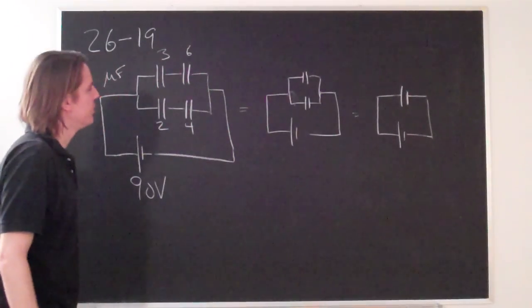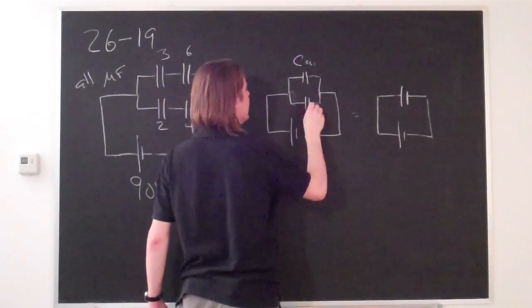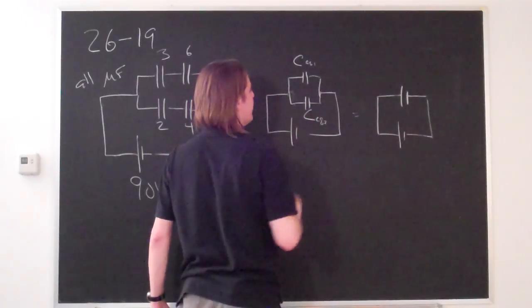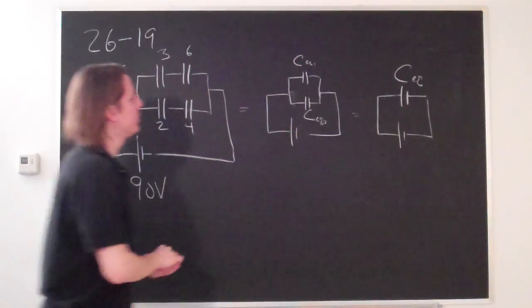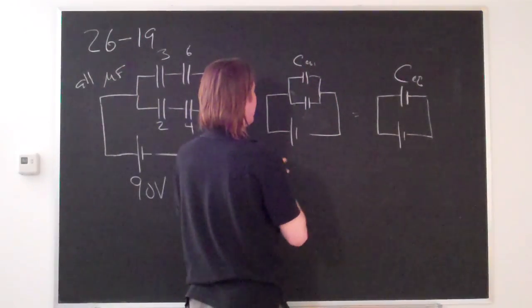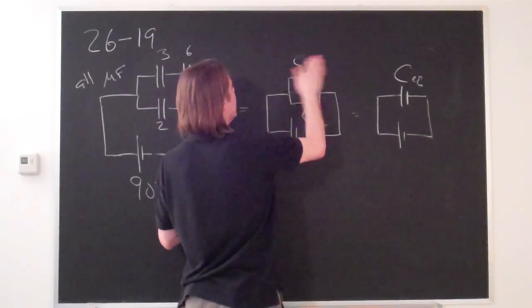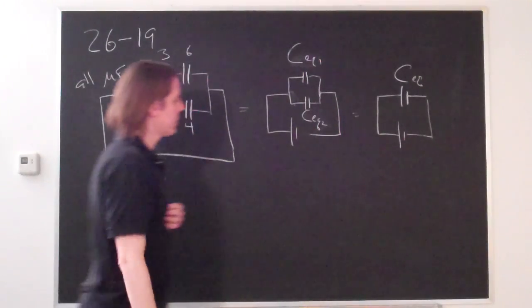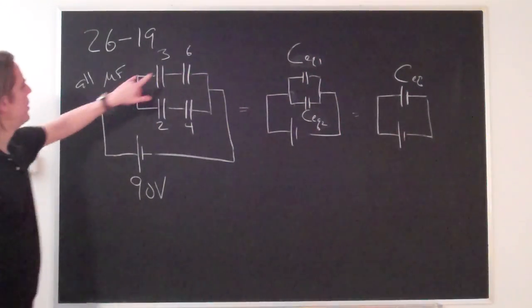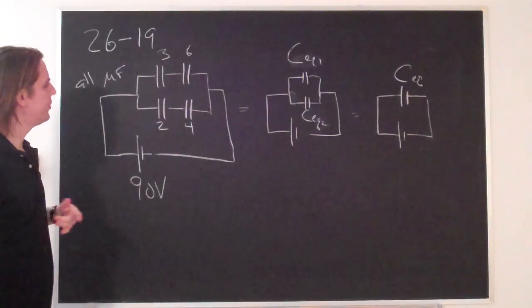And that's equal basically to this. You can treat the thing ultimately as having one capacitance. So if we call this the equivalent capacitance one and this the equivalent capacitance two, and this we'll call the total equivalent capacitance, we'll just go through for part A and figure out what the values of these are.